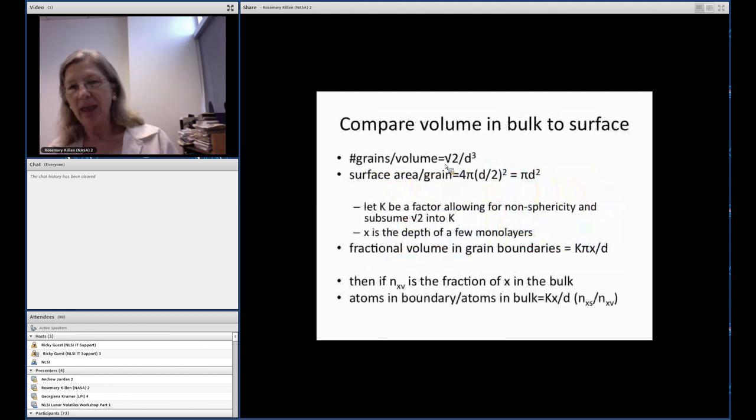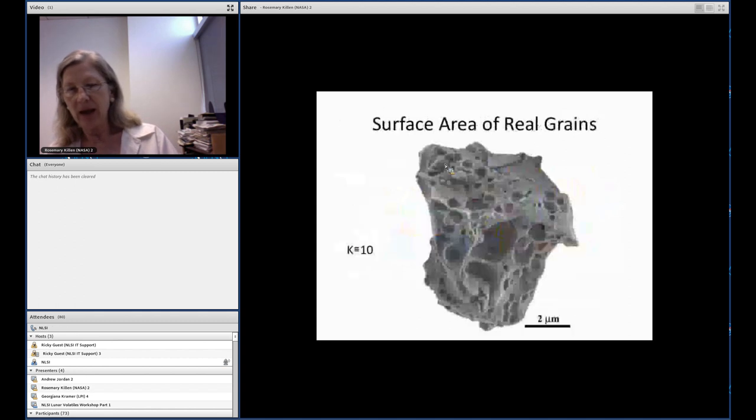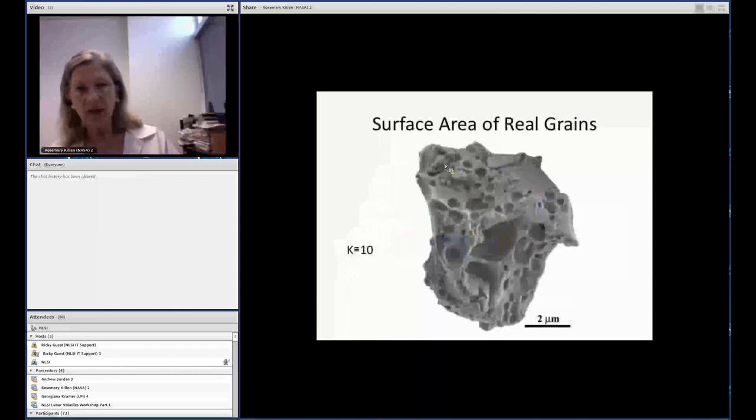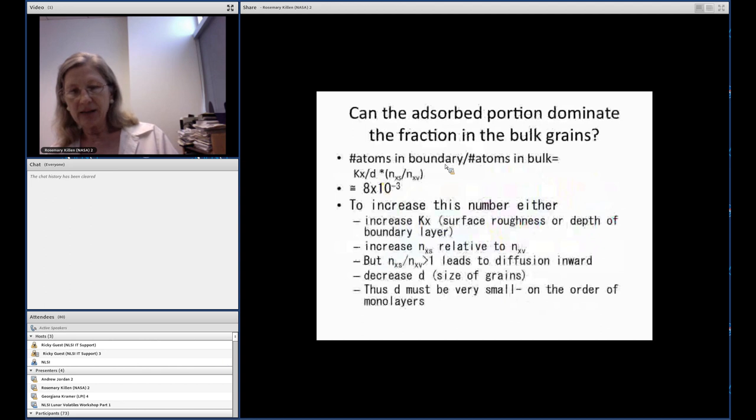In order to allow for non-sphericity and the fractal shapes of grains on the surface of Mercury and the Moon, we subsume the root 2 into a scaling factor k. Then our fractional volume in the grain boundaries over the grain itself is going to be k pi x, where x is our assumed depth of the enhancement to d, the diameter of the grain. If nxd is the fraction of x in the bulk, and nxs is the fraction of atoms in the boundary or the rim, then the atoms in the boundary scale to the atoms in the bulk is k x over d times nxs over nxd.